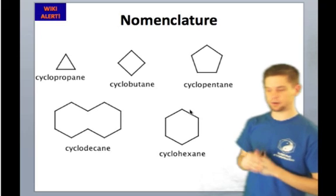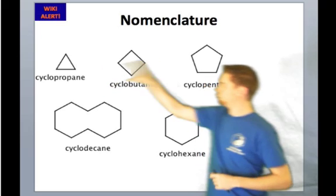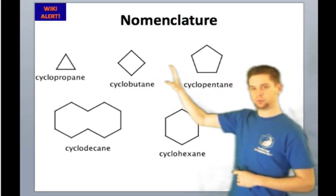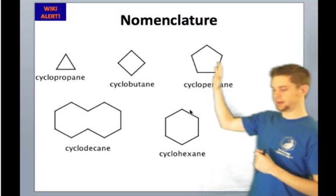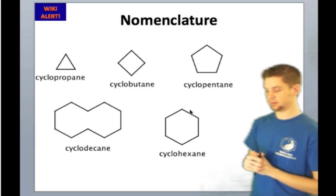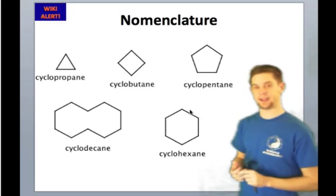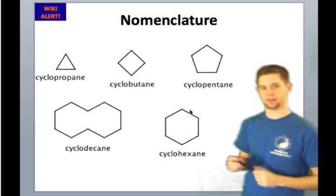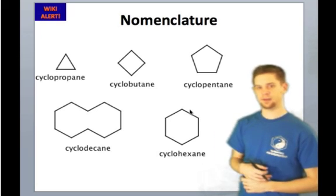Looking here, we have cyclopropane in the upper left, followed by cyclobutane. We use the 'bute' prefix to refer to four carbons. Cyclopentane, and now we're getting into the Greek prefixes. Cyclopentane, cyclohexane, and cyclodecane are all examples of molecules that use the Greek numbering system as their prefixes. The wiki explains more about the higher prefixes and other suffixes as well.